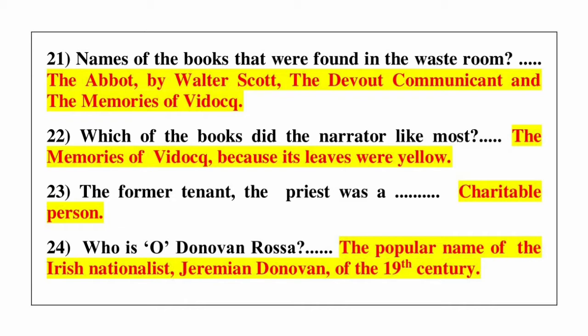Question number 23: the former tenant the priest was a charitable person. Question number 24: who is O'Donovan Rossa? Answer is the popular name of the Irish nationalist gentleman Donovan of the 19th century.